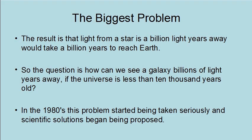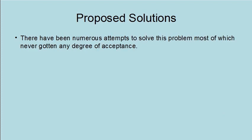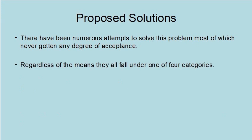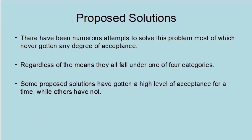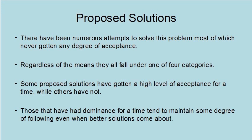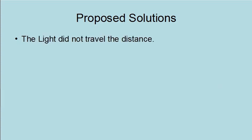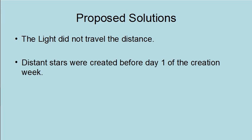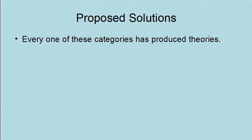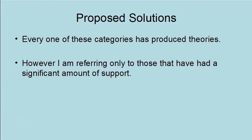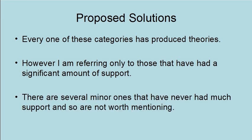In the 1980s, this problem started being taken seriously, and scientific solutions began being proposed. There have been numerous attempts to solve this problem, most of which never got any degree of acceptance. Regardless of the means, they all fall under one of four categories. Some proposed solutions have gotten a high level of acceptance for a time, while others have not. Those that have had dominance for a time tend to maintain some degree of following, even when better solutions come about. The four types of solutions are: the light did not travel the distance; distant stars were created before day one of the creation week; the light got here faster; and time dilation. Every one of these categories has produced theories, though I am referring only to those that have had a significant amount of support.